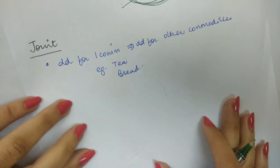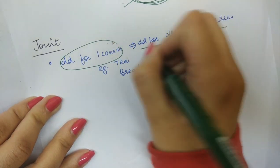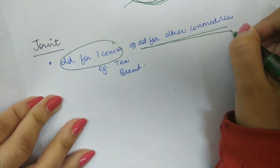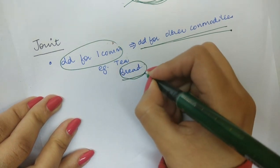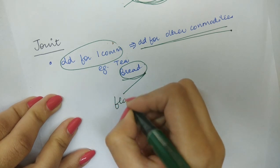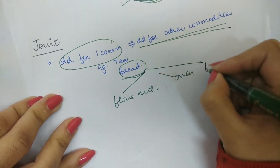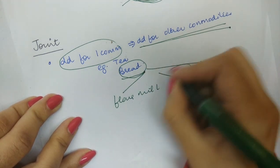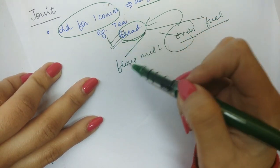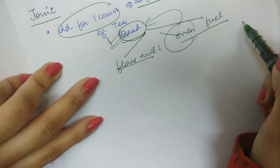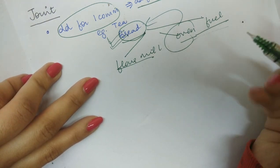Joint demand is when the demand for one commodity in itself implies the demand for another commodity. For example, in a finished product like bread, there are many things needed: the services of the flour mill, an oven, and fuel. You need all these things in order to make bread. So the demand for bread means the demand for these other commodities, and therefore it is called a joint demand.